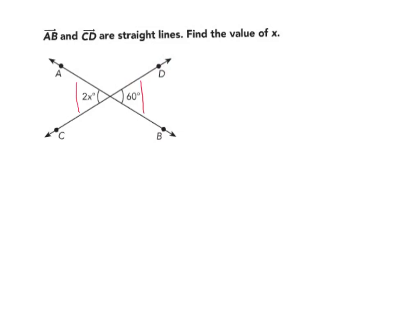Angles that are opposite each other are equal to each other, so in this case, I know that 2X degrees equals 60 degrees.